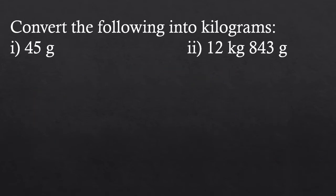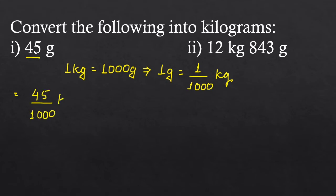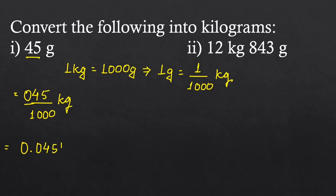The next question is to convert the following into kilograms. The relation between kilogram and gram is 1 kilogram equals 1000 grams, which means 1 gram equals 1 upon 1000 kilograms. Here, 45 grams equals 45 upon 1000 kilograms. There are 3 zeros in the denominator but only 2 digits in the numerator, so we add a zero on the left, making it 045. We then put the decimal before this, giving 0.045 kilograms.